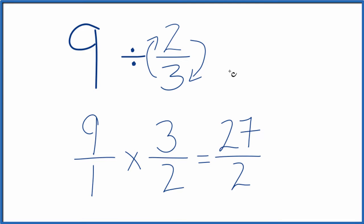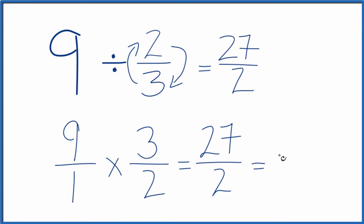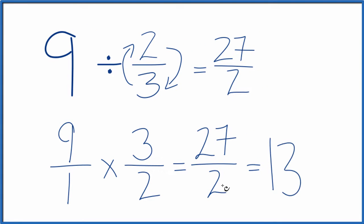So 9 divided by 2 thirds equals 27 over 2. This is an improper fraction. We could change it to a mixed number. Let's see, 2 goes into 27. 13 times 2 is 26, with 1 left over. So 13 and a half.